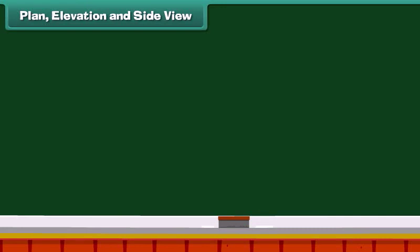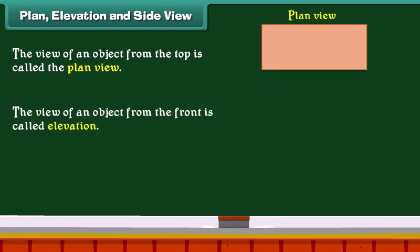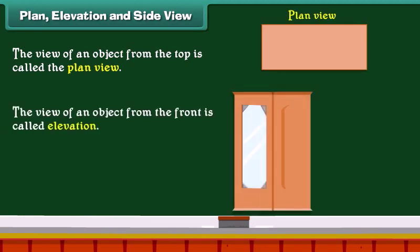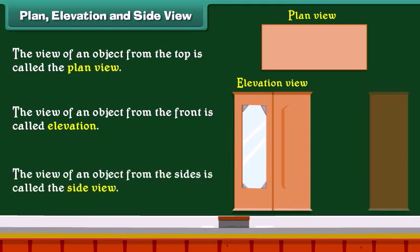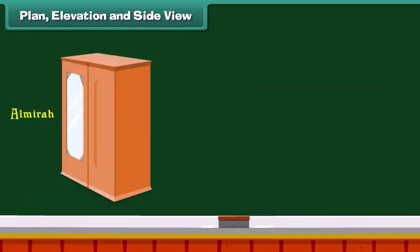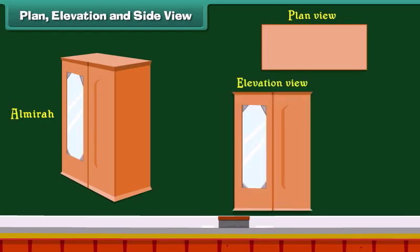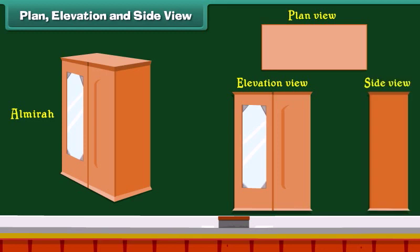The view of an object from the top is called the plan view. The view of an object from the front is called elevation. The view of an object from the side is called the side view. Looking at this almira: this is the plan view, this is the elevation view, and this is the side view of the almira.